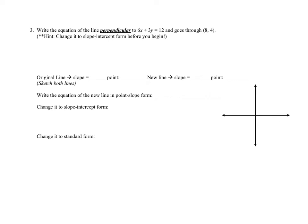For the next problem: write the equation of a line perpendicular to 6x plus 3y equals 12 and going through (8, 4). This equation is in standard form, not slope-intercept, so we need to convert it. Subtract 6x from both sides to get 3y equals 12 minus 6x, then divide everything by 3.